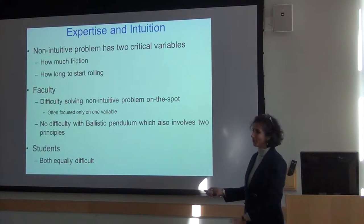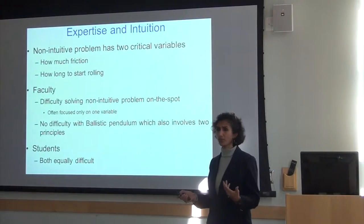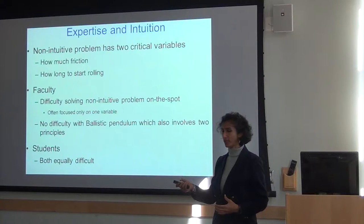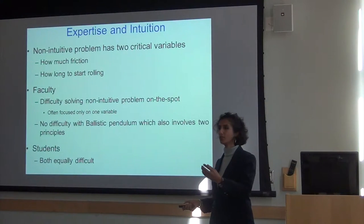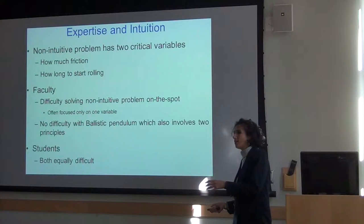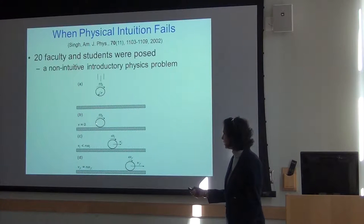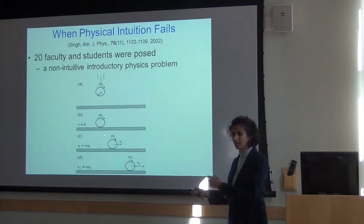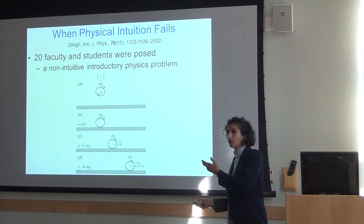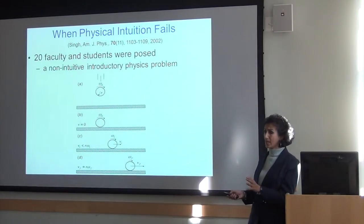There are two ways to solve the spinning wheel problem. You can use an inelegant way — write down equations for linear and rotational kinematics, then use the fact that V_final = R × ω_final, and you'll immediately see that the coefficient of friction drops out. A more elegant way is to think about angular momentum being conserved about the point where the wheel touches the ground when it falls. If angular momentum is conserved, the coefficient of friction couldn't make a difference in the final speed at which the wheel starts to roll without slipping.